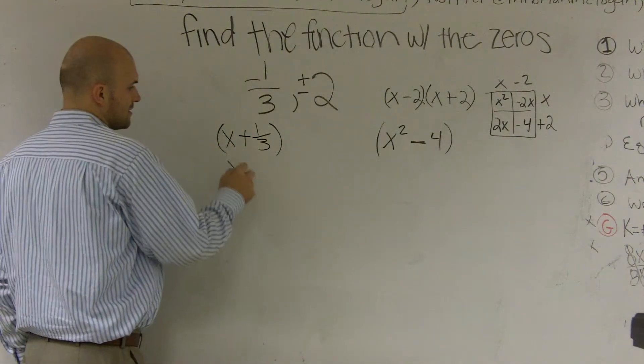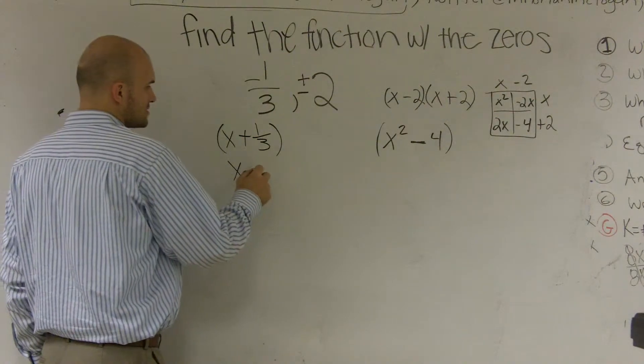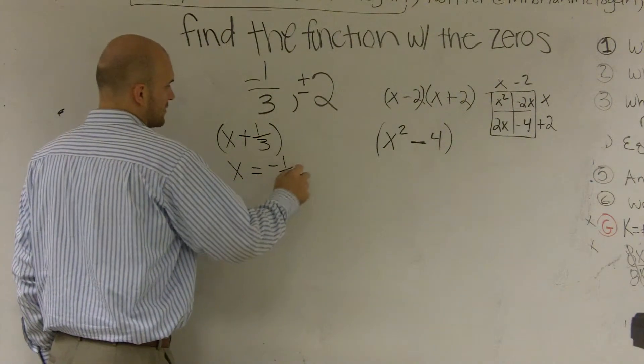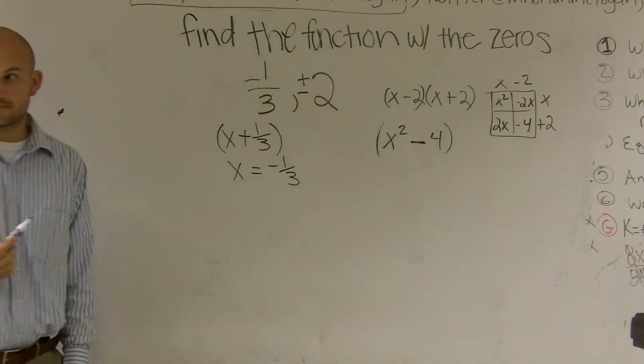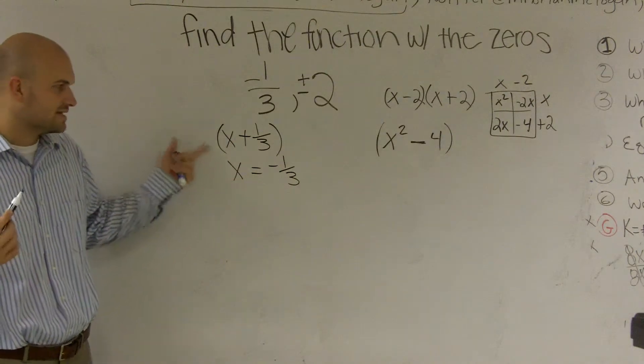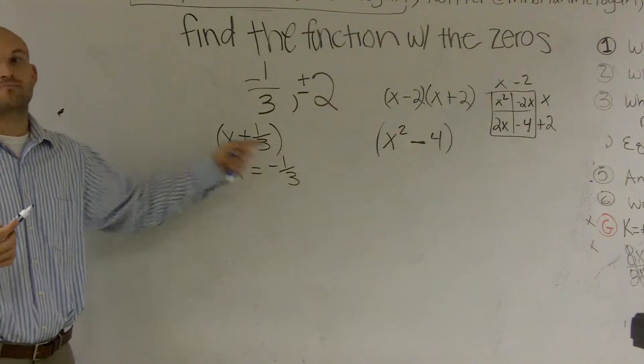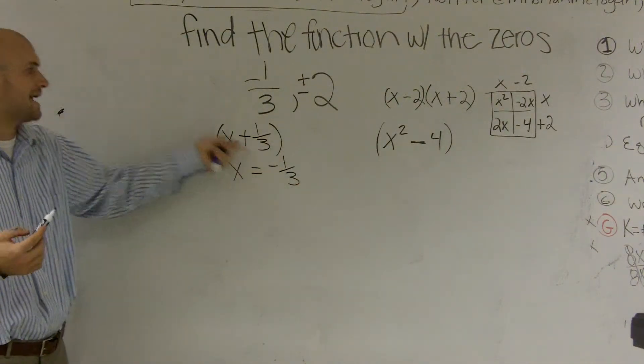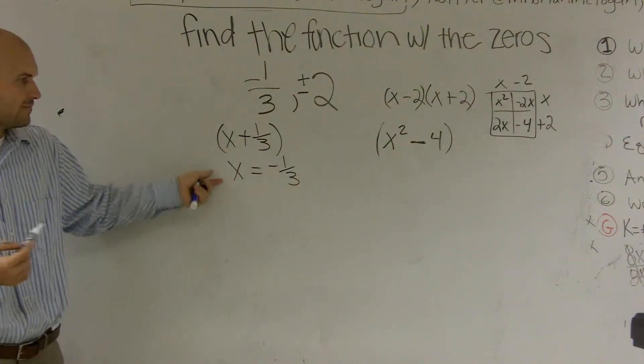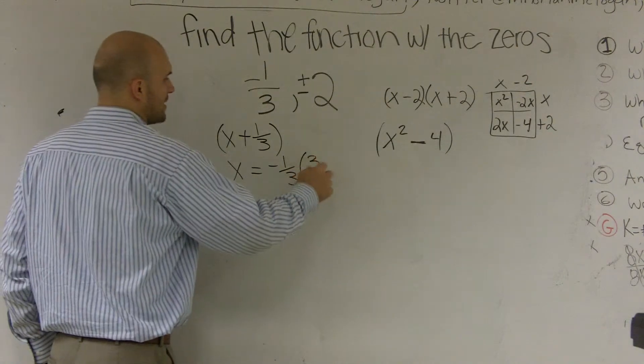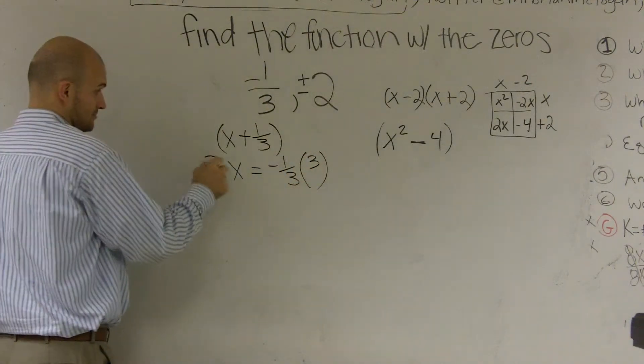So what I'm going to do is say, is there another way I could have wrote this zero? Instead of saying x plus one-third, is there another way I could have wrote this zero? Well, let's pretend I had x equals negative one-third, right? That would have been a zero form. Right. You would say, hey, x equals negative one-third. That's the zero.